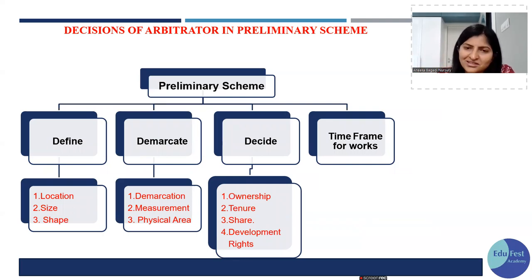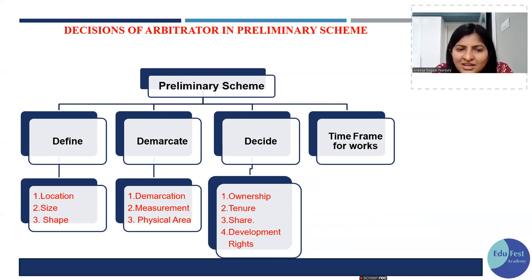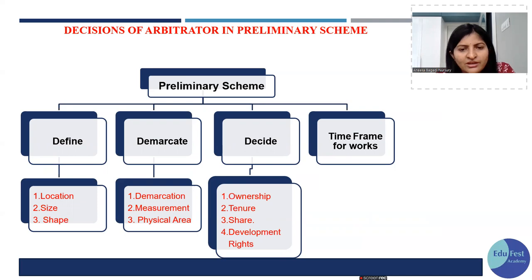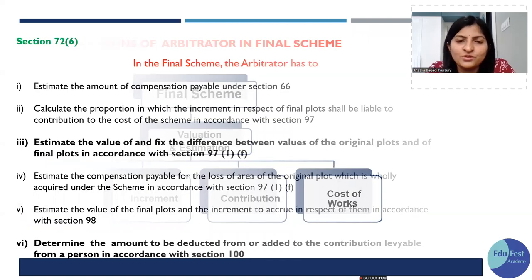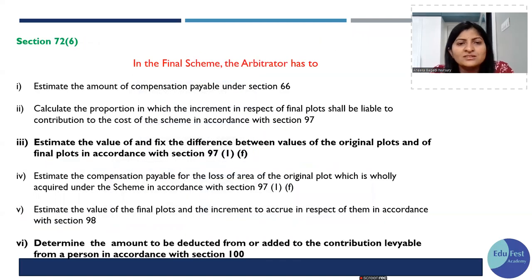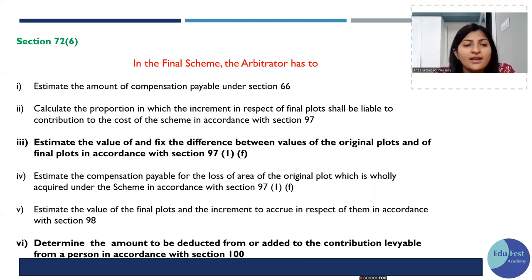The final scheme must be submitted within 10 months. The preliminary scheme defines: location, size, shape (physical demarcation), who the owner is, tenure, share, and development details. In the final scheme, money-related and financial matters are covered — compensation, increment, and contribution. The final scheme defines: how much compensation is to be given, how much increment, and the difference between the original plot value and final plot value.